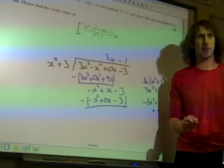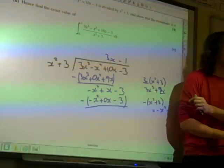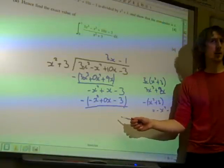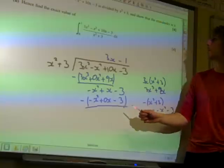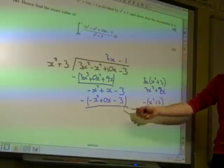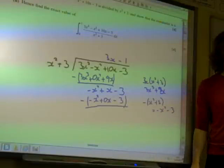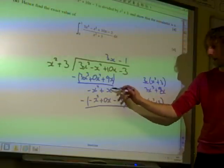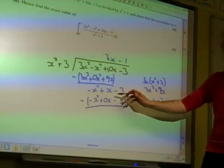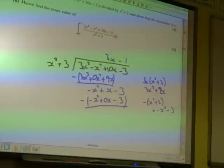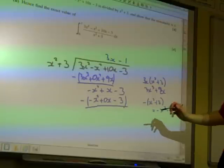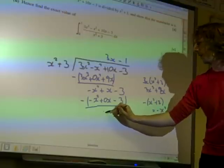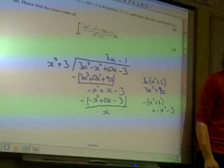The little trap they set in this question is that it would be very easy to think the remainder was 0. But you'll notice that although the x squared and number terms disappear, we've got x minus 0x. So we end up with x as the remainder, not 0. That's the trap - it's x, not 0. That's how we get it.